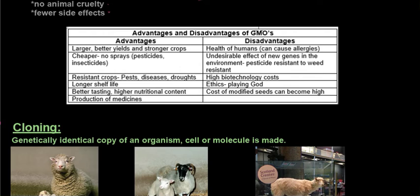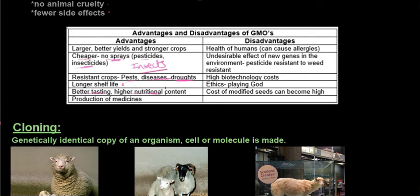Know the advantages and disadvantages of GMOs, as these can be asked in exam questions. Advantages: larger, better yield and stronger crops that are resistant to diseases, droughts, and pests. It'll be cheaper because there's no spraying needed — pest resistance is built into the genes of the plants. Some genetically modified crops are already toxic to insects that eat them. They have a longer shelf life, can be engineered to taste better, have better nutritional content — a major factor in developing countries — and enable production of medicines like insulin and vaccines.